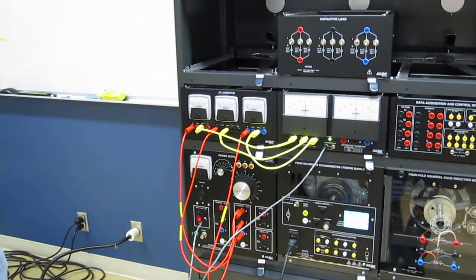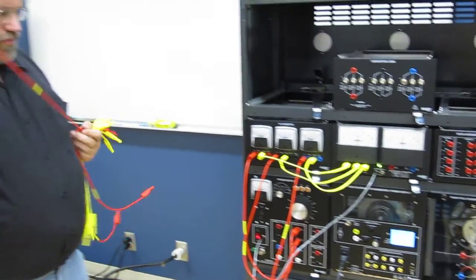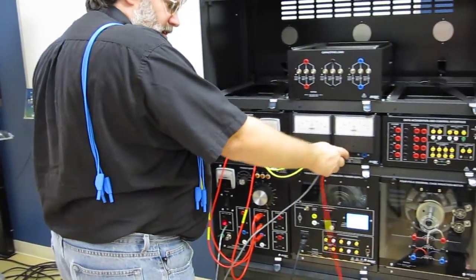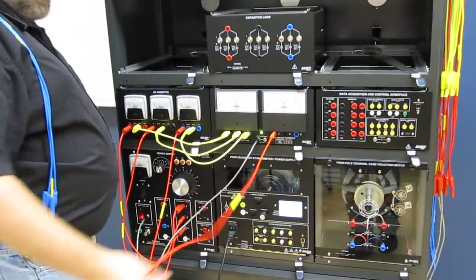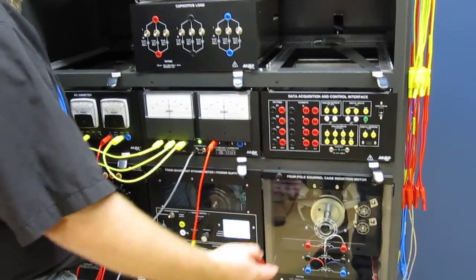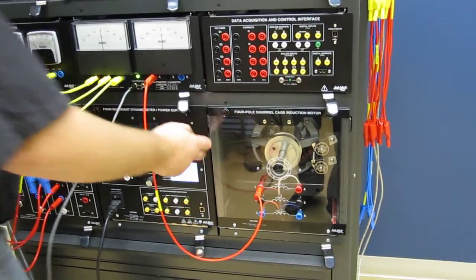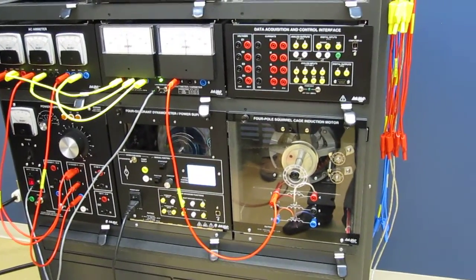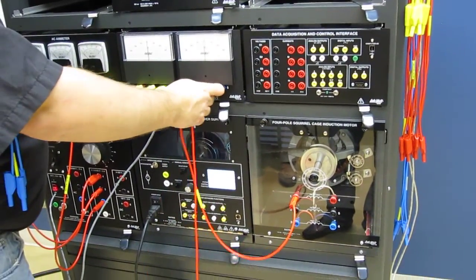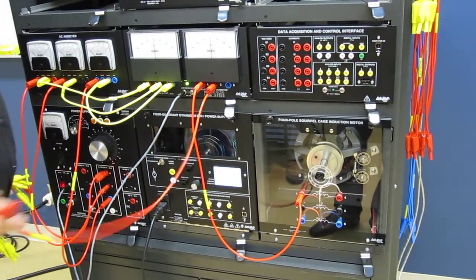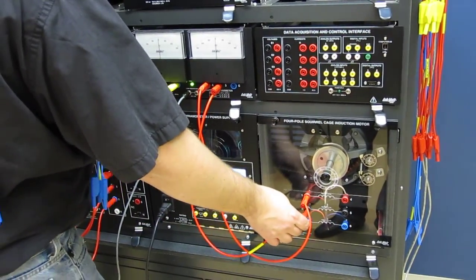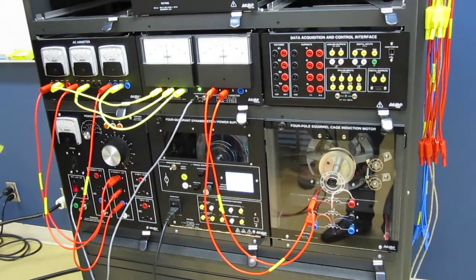And after that I'll go straight into the squirrel cage machine itself. I already put the timing belt between the squirrel cage machine and the dynamometer. You could use other types of dynamometers if you have them. It doesn't need to be the brand new version of it.